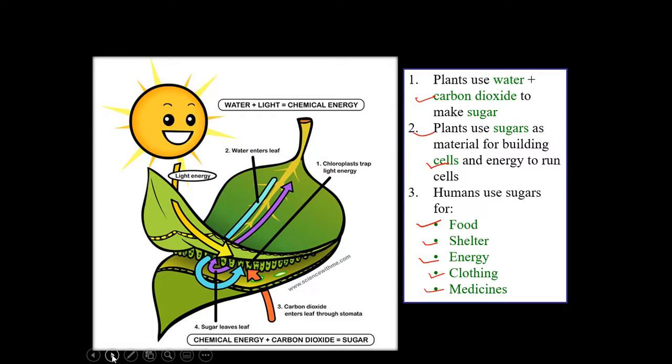Plants use sugar as material for building cells and energy to run cells. Plants use sugars for food, shelter, energy, clothing, and medicine.